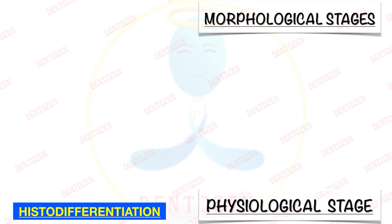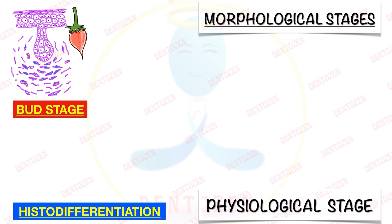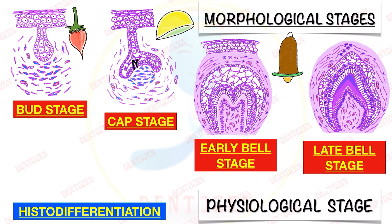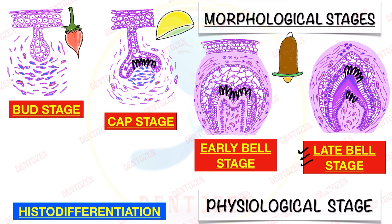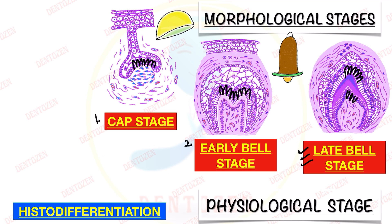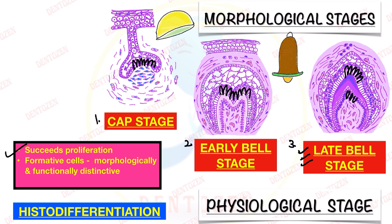The third stage is histodifferentiation, which succeeds proliferation. After cells proliferate, cell division stops and cells begin to differentiate. Histodifferentiation starts in the cap stage where cells begin to become columnar in shape. They become more columnar in bell stage and become tall, properly differentiated ameloblasts and odontoblasts in late bell stage, where histodifferentiation reaches its peak. So histodifferentiation is not seen in bud stage but is seen in cap stage, early bell stage, and late bell stage. The formative cells — ameloblasts and odontoblasts — become morphologically and functionally distinctive and their mitotic activity ceases.